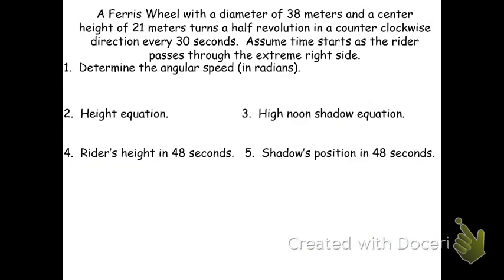Now let's try another example — pause the video and work it out, then resume to check your answers. Note that it's the diameter that's 38 meters, not the radius. If the diameter is 38 meters, the radius is half of that: 19 meters. Also, since the wheel did a half revolution in 30 seconds, it does a full revolution in 60 seconds.